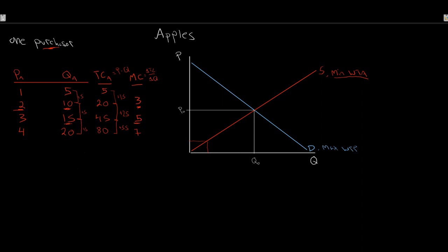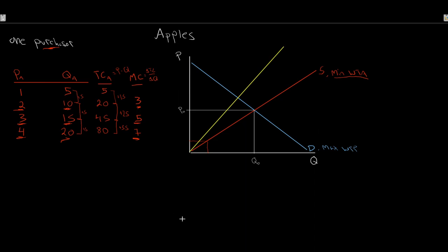This is very similar to what we did with the monopolist — we worked out total revenue and compared average revenue to marginal revenue. Here, we're comparing the cost of buying apples versus marginal cost. And we do see that our marginal cost curve is steeper than our supply curve. However, unlike with our monopolist where marginal revenue was always twice as steep as demand, that's not necessarily the case with our monopsonist. The marginal cost is steeper than supply, but we can't always say it's twice as steep.